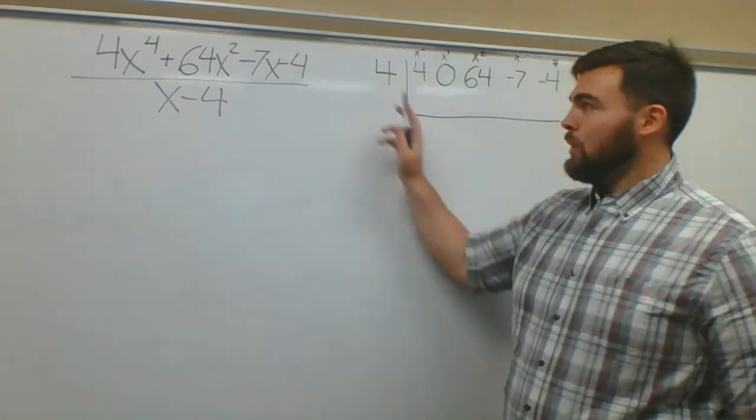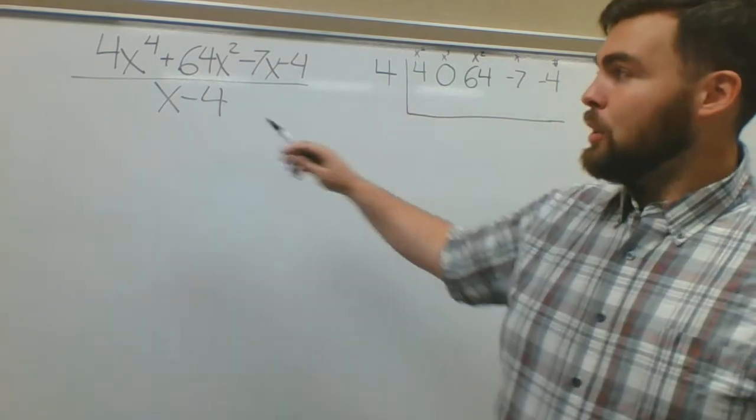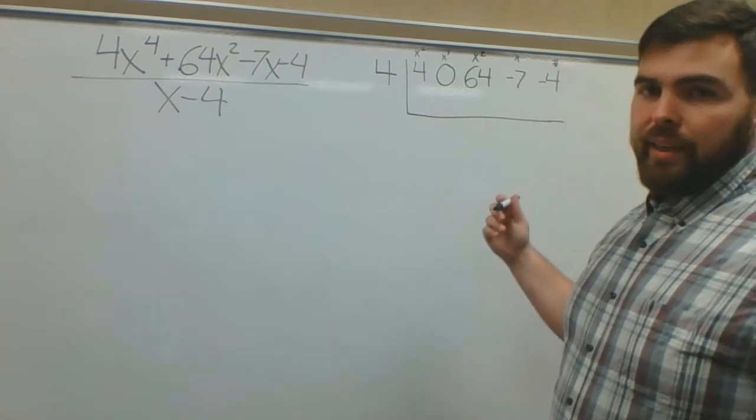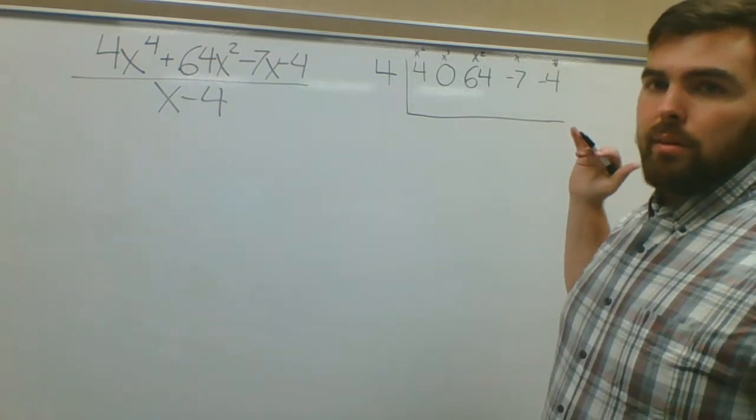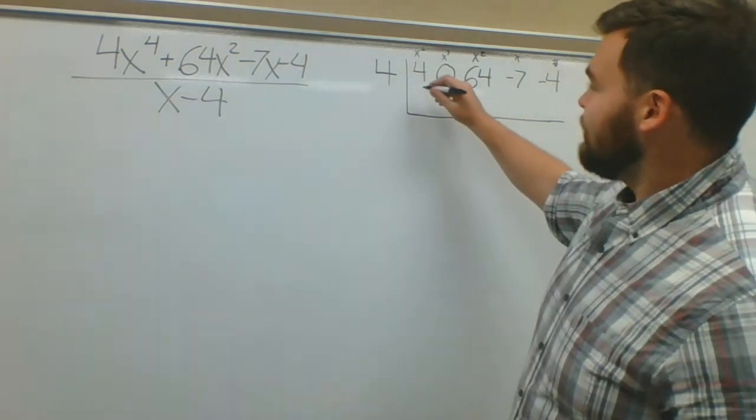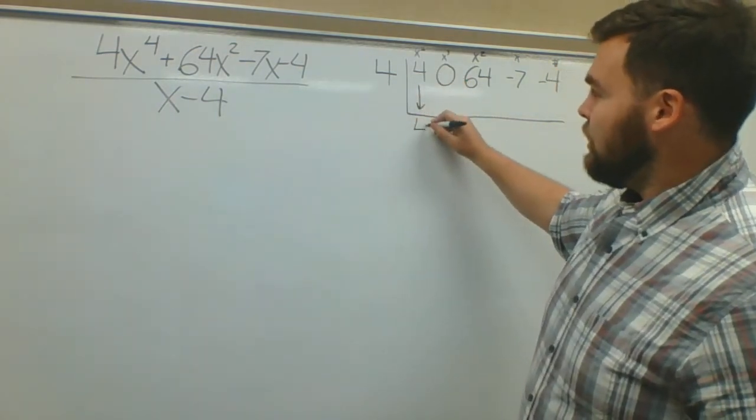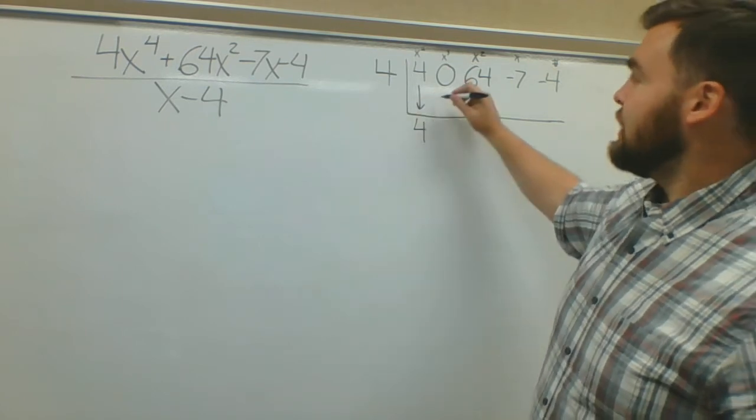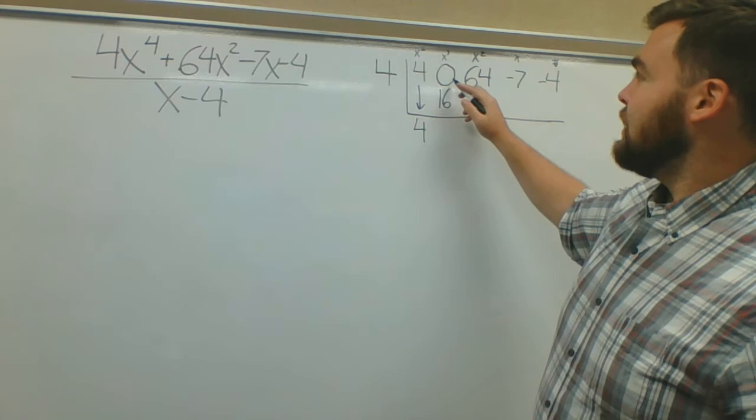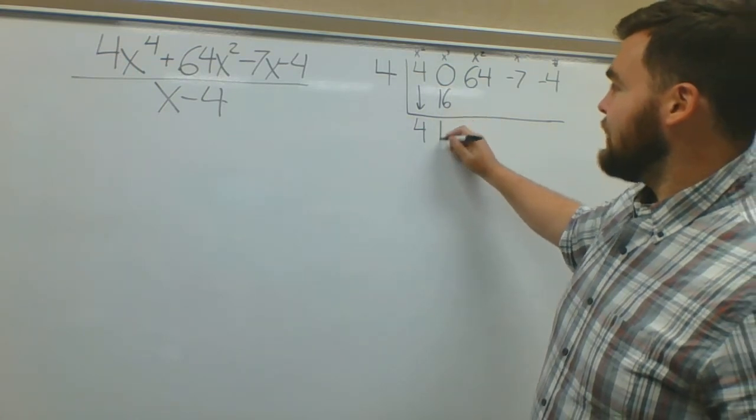This is how it should be set up. It should be 4, 0, 64, negative 7, negative 4, with your k value being positive 4. Remember, change the sign. Don't make a mistake now. Now go through the synthetic division. If you want to do this on your own, go ahead and press pause now, and then we'll come back together. Drop 4. 4 times k is 16. Add this together, this is 16.